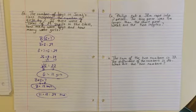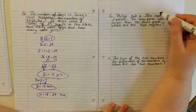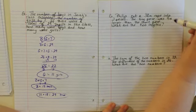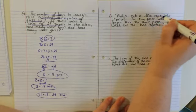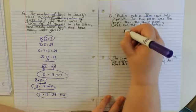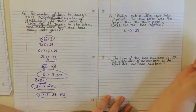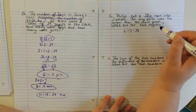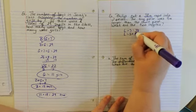Let's try another one. Phillip cut a 38 meter rope into two pieces. The long piece was nine meters longer than the short piece. What are the two lengths? So our two lengths are going to add up to 38 meters: long plus short equals 38. The long piece equals the short piece plus nine.